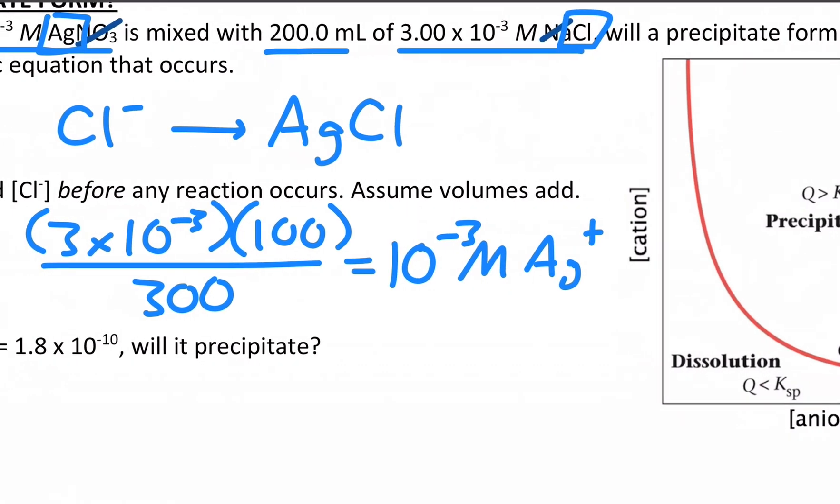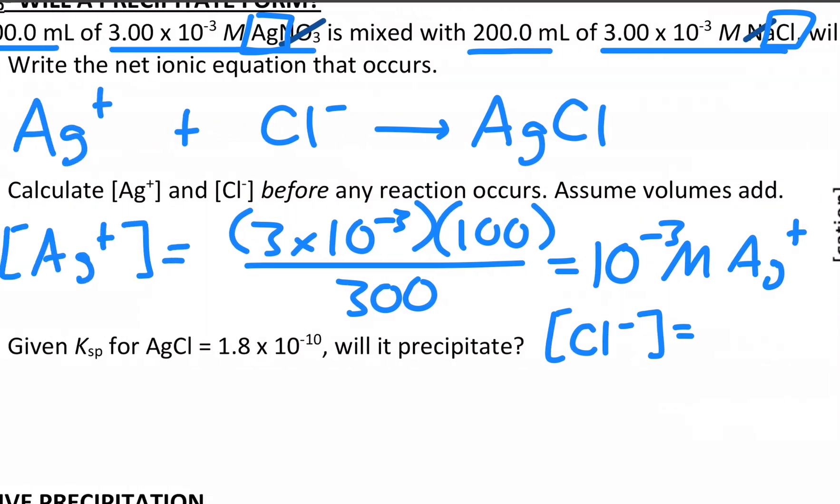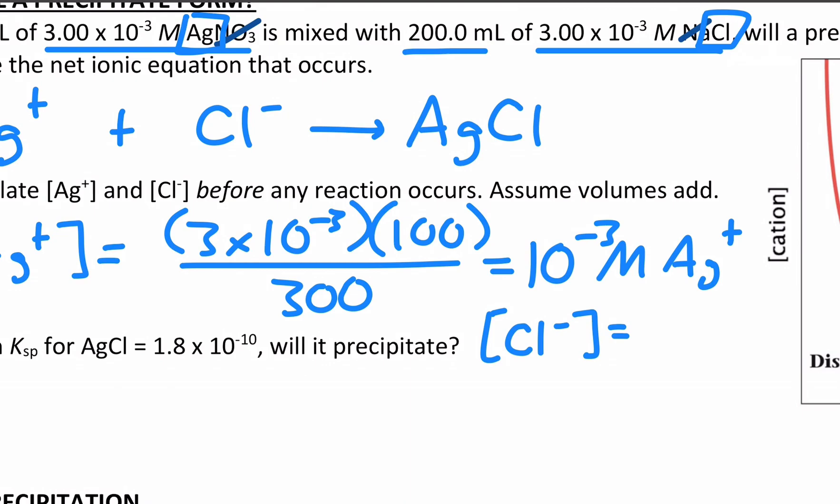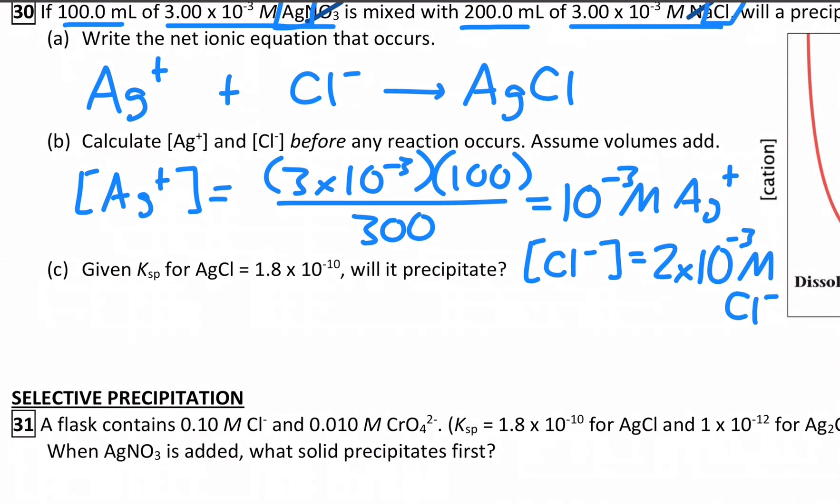The chloride ion is almost exactly the same thing. The chloride, I'm just going to squeeze it in down here, is its molarity. Its source is the NaCl, so that's 3 times 10 to the negative 3 times 200, and then divided by the same total. So we get 3 times 10 to the negative 3 times 200 divided by 300. That turns into 2 times 10 to the negative 3 molar chloride, just doing the same process analogously.